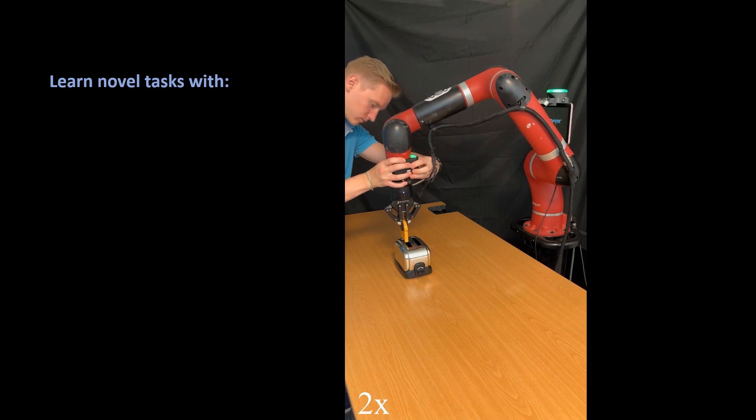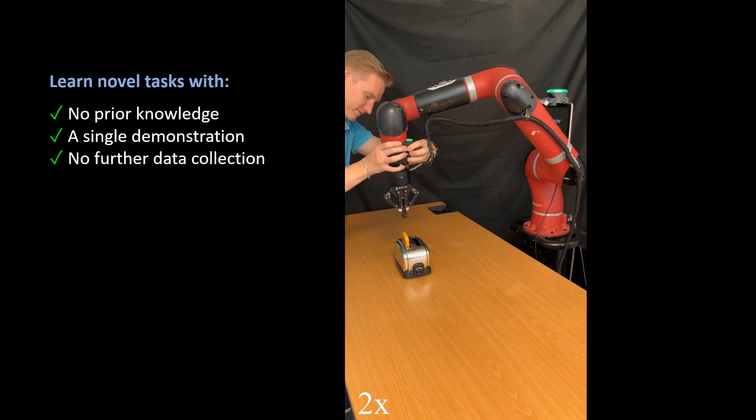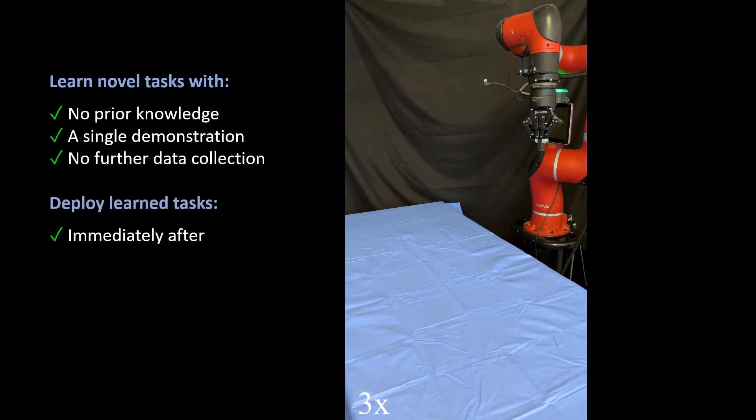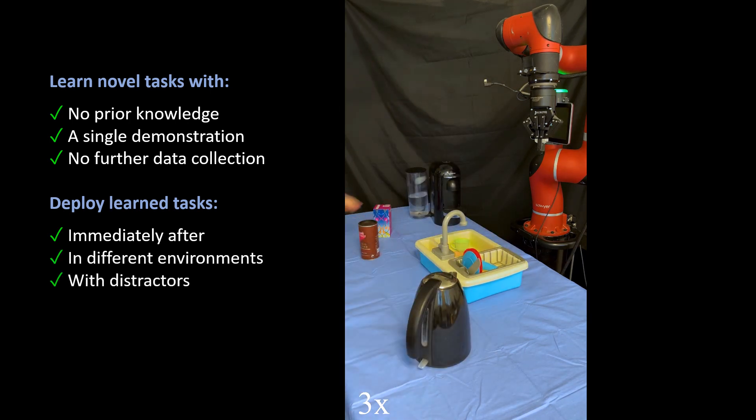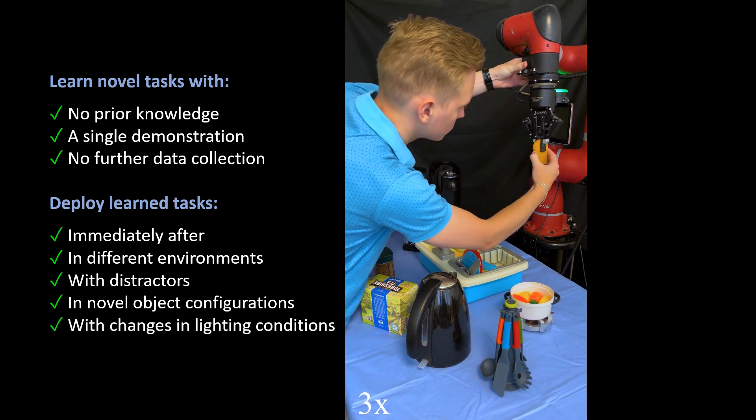Wouldn't it be great to teach a robot a new task that it knows nothing about in advance, from just a single demo and no further data collection? And to be able to deploy this task immediately after, in a different environment, with distractors, in novel object configurations, and with changes in lighting conditions?